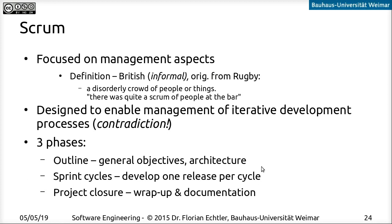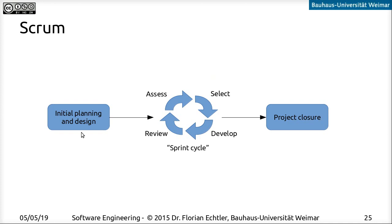Each of the sprint cycles is very much like a release in extreme programming. So there's a bracket around the agile process which does a little bit of planning and design upfront at a high level, and then does a wrap-up with documentation. In each sprint cycle, we have four phases: assessment, selection, development, and review.